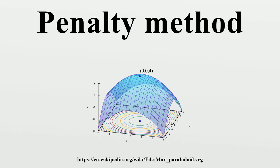called a penalty function, to the objective function that consists of a penalty parameter multiplied by a measure of violation of the constraints. The measure of violation is non-zero when the constraints are violated and is zero in the region where constraints are not violated.